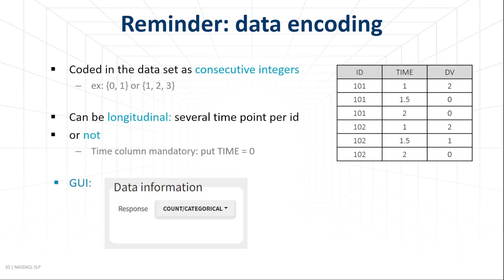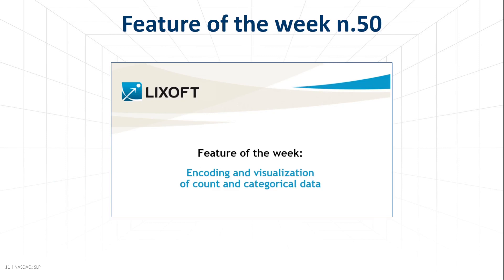Finally, after loading a categorical data asset in Monolix, we need to change the type of data from continuous to categorical count. If this type of data is new to you, check our feature of the week video number 50 for a detailed description about the encoding and visualization.